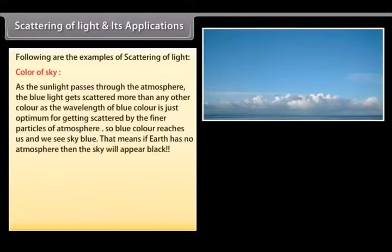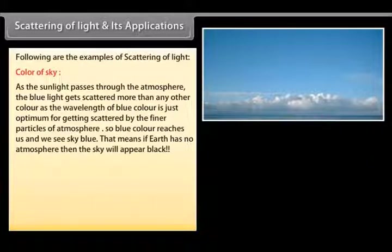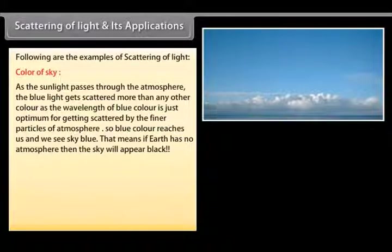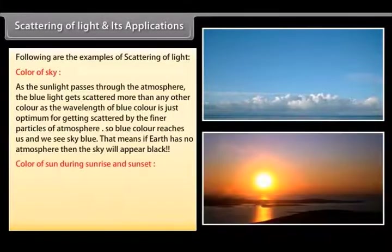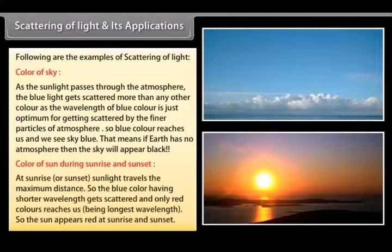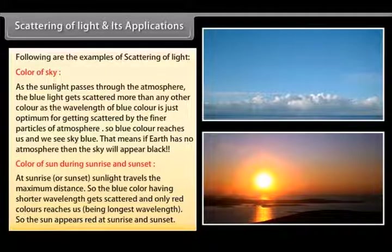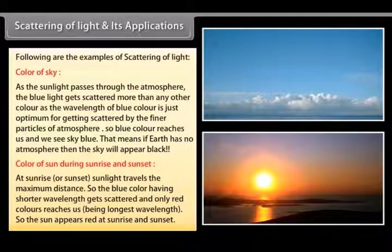As sunlight passes through the atmosphere, the blue light gets scattered more than any other color because the wavelength of blue light is just optimum for scattering by the finer particles of the atmosphere. So blue color reaches us and we see the sky as blue. If Earth had no atmosphere, the sky would appear black. During sunrise or sunset, sunlight travels the maximum distance, so the blue color with its shorter wavelength gets scattered away and only red color — having the longest wavelength — reaches us, making the sun appear red.